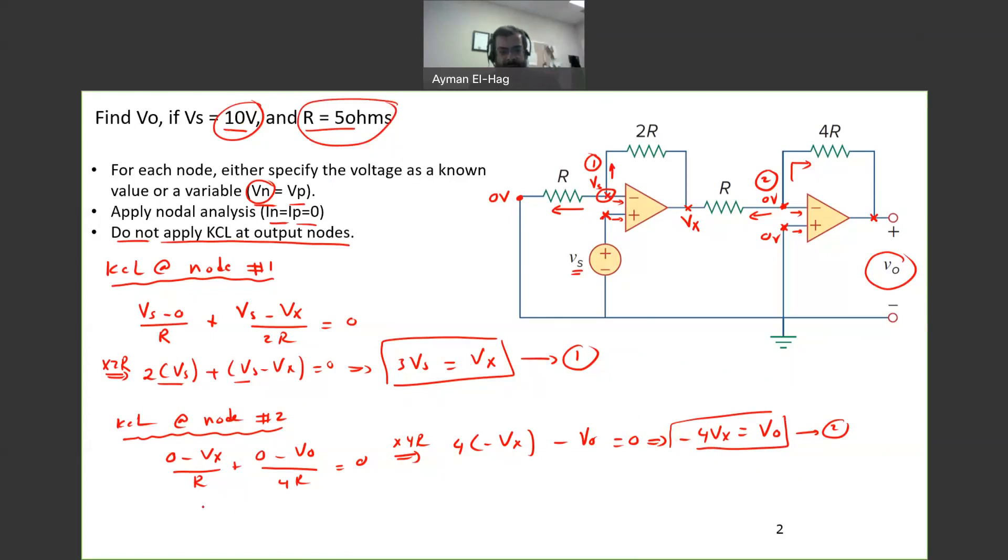So Vout is equal to minus 4Vx, but Vx equal to 3Vs. So I will substitute. So I will substitute 1 in 2. So your Vout is equal to minus 4Vx, which is 3Vs, or it's equal to minus 12Vs. And now Vs is 10V, which is minus 120V.